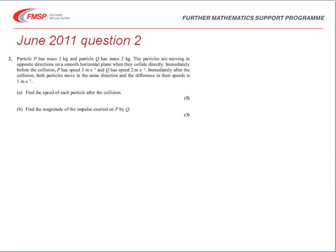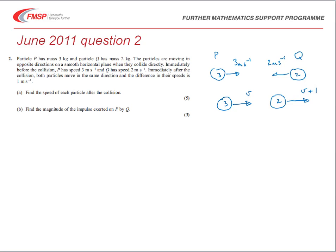Drawing the diagram: initially P of mass 3 moves at 3 meters per second, and Q of mass 2 moves in the opposite direction at 2 meters per second. After the collision, they both move in the same direction. We don't know which direction initially, so let's assume P moves to the right with speed V, and Q moves in the same direction at V plus 1. If we have the direction wrong, V will turn out to be negative.